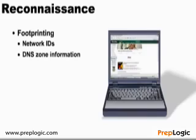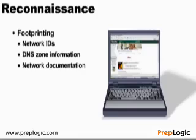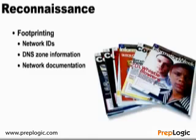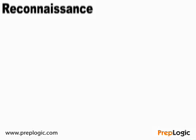Most companies need to preserve a public web presence, and they map their names into DNS. DNS simply maps a friendly human hostname to an IP address, and we can search this to pull out information used in our attacks. Network documentation is another source — you'd be surprised where companies store information about their networks, including on their own websites or in trade magazines like InfoWeek, where they publish working documents of their networks.